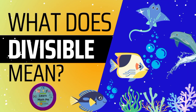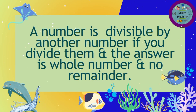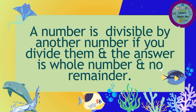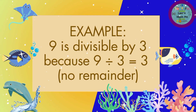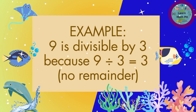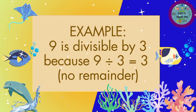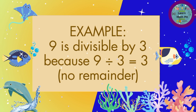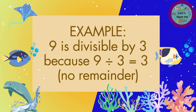So, what does divisible mean? A number is divisible by another number if you divide them and the answer is a whole number with no remainder. Example: 9 is divisible by 3. Kasi when you divide 9 by 3, the answer is 3 and the remainder is 0. So, wala siyang remainder — yun ang ibig sabihin ng divisible.